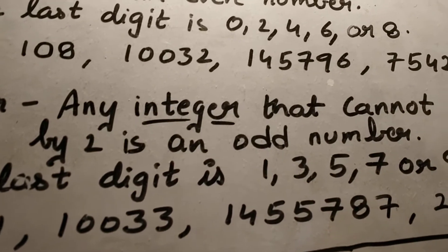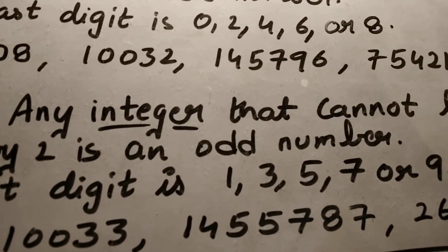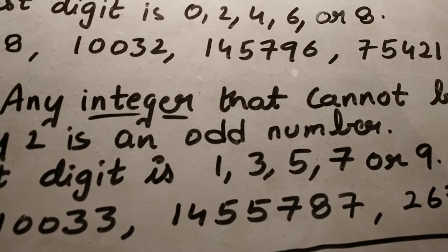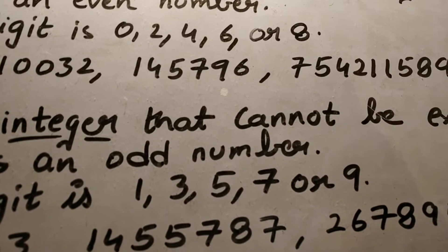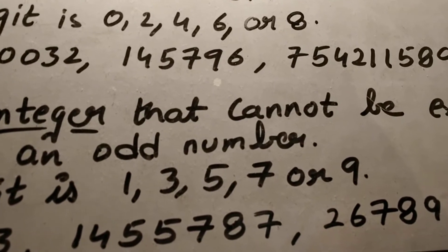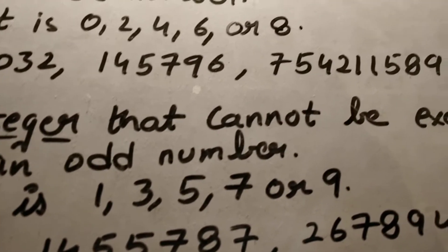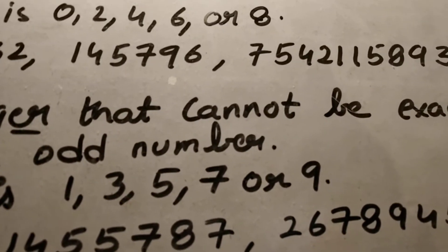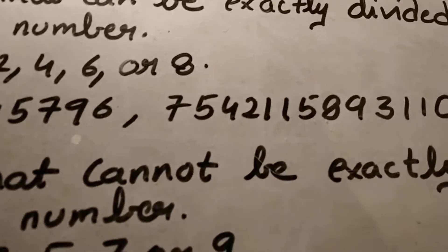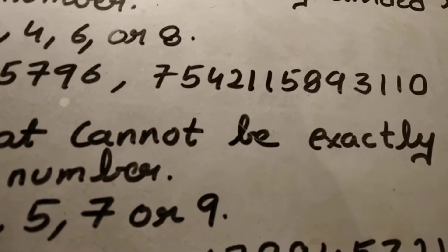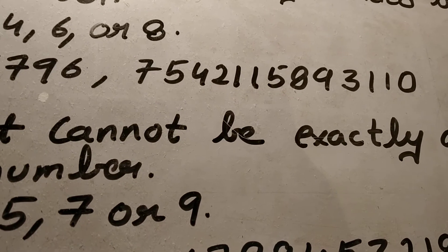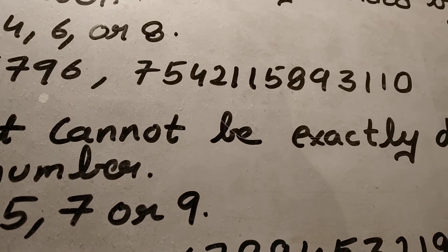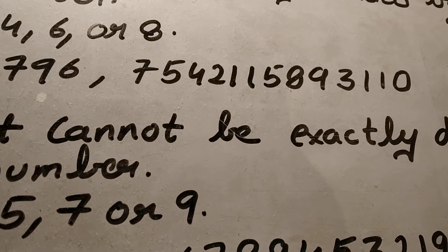For 10032, the last digit is two, so it is also an even number. For 1457996, six is the last digit, so it is also an even number.